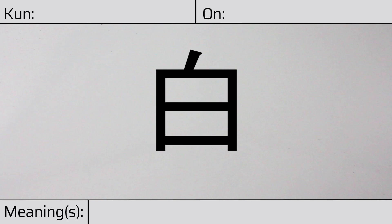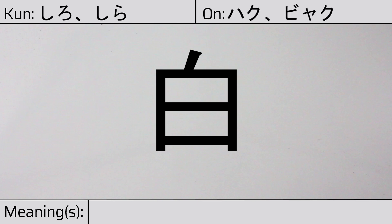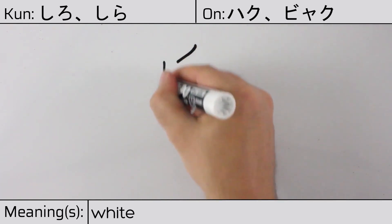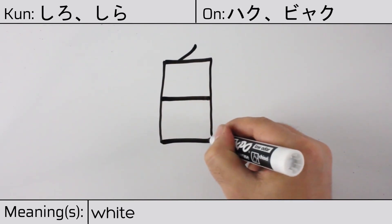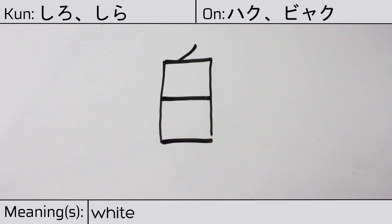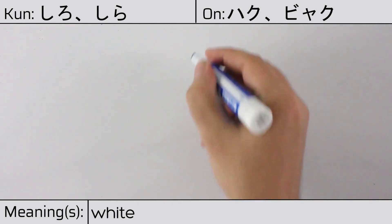Welcome to this lesson on Japanese kanji. Today, we'll be discussing this character. This kanji has kunyomi or Japanese readings of shiro or shira, and it has onyomi or Chinese readings of haku or byaku. This character has the meaning white. Here is the stroke order.